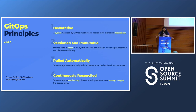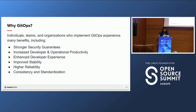These are a set of best practices — you don't have to have all of them met in order to be using GitOps. Everyone's journey looks different and you can start using GitOps and add these in later to tweak and harden your setup. So, why GitOps? There are many benefits, such as stronger security guarantees, increased developer and operational productivity, a better developer experience — you're not stuck on a Saturday trying to figure out what happened with a Friday manual deployment. There's also improved stability, higher reliability, and consistency and standardization.